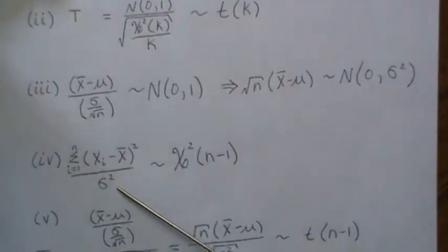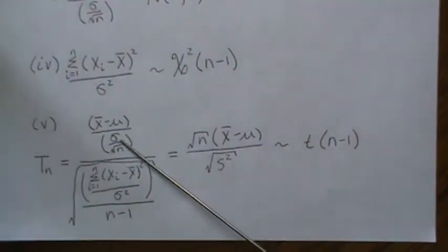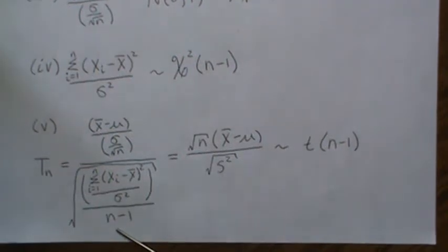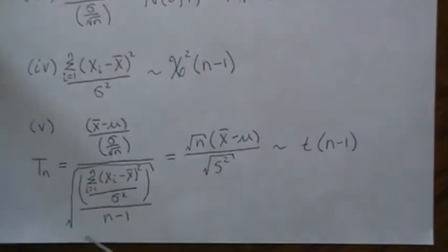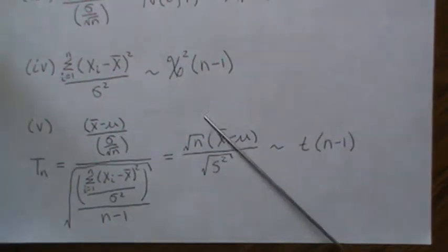We can take their ratio: this standard normal divided by chi-squared divided by degrees of freedom, or the square root of that, is a t distribution. This simplifies to this, which again is a t.